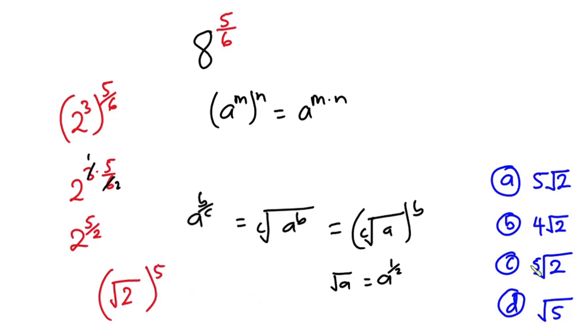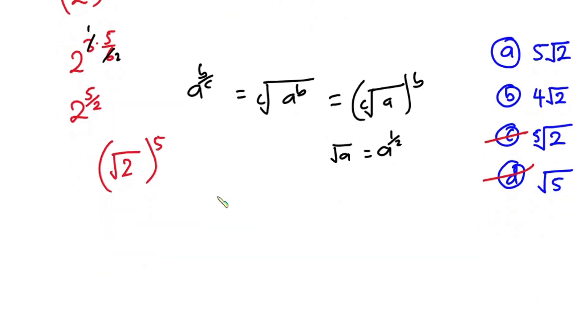Now if you compare this one with the options, you can see that d cannot be the answer. Why? Because we have square root of 2 over here but this is square root of 5. And then we also have square root and not fifth root. So c cannot be answer as well. Now between a and b you have 50% confidence level. That means you have 50% risk. So let's go ahead and then simplify this further.